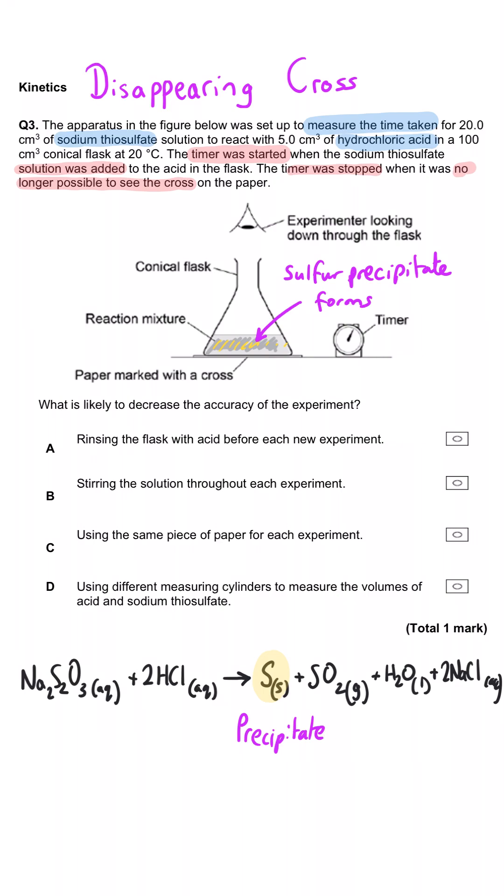Which is likely to decrease the accuracy of the experiment? Rinsing the flask with acid before each new experiment.